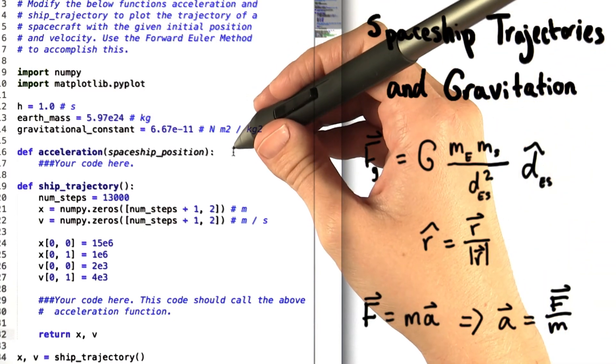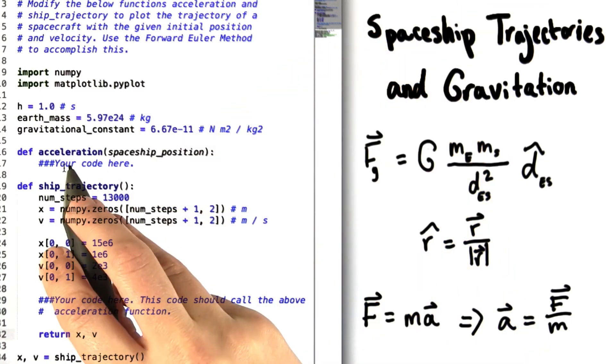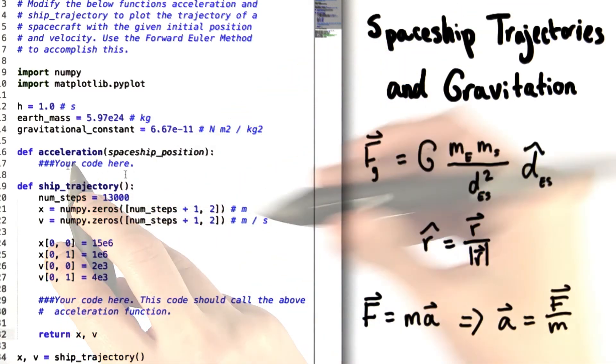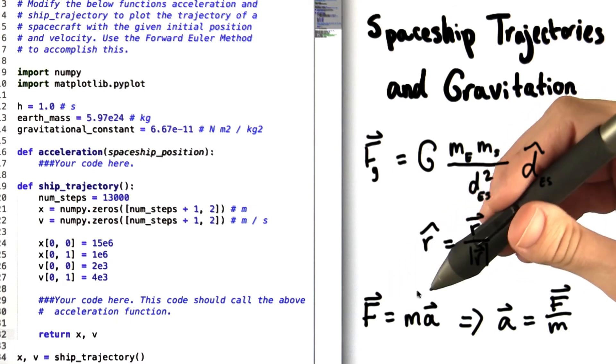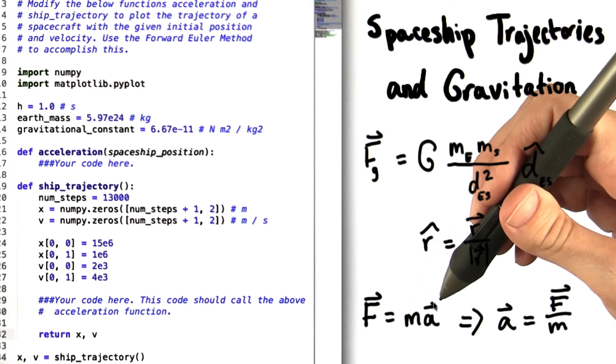Now if we look back at the code, you'll see that this function we're asking you to define is actually for acceleration, not force. But we know that force and acceleration are intimately related by Newton's second law, which is that force equals mass times acceleration.